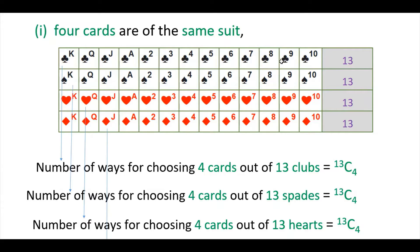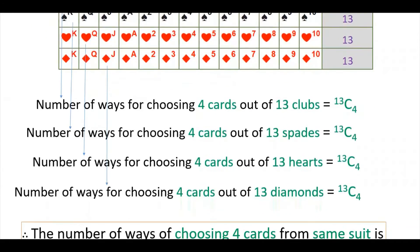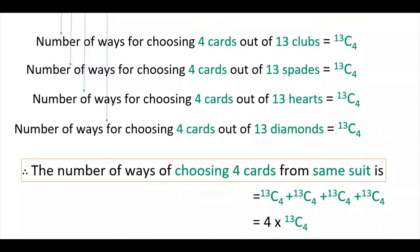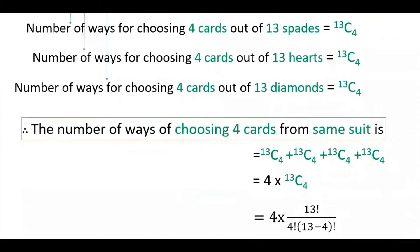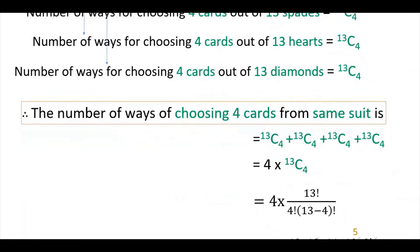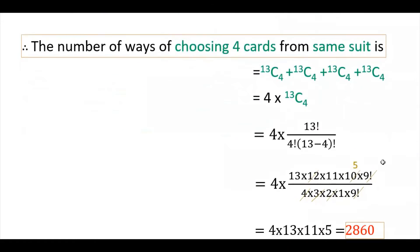From 13 club cards, the number of ways of choosing 4 is 13C4. Similarly, from 13 spades it is 13C4, from 13 hearts 13C4, and from diamonds also 13C4. Therefore the total number of ways of choosing 4 cards from the same suit is 4 into 13C4, which equals 4 into 13 factorial divided by 4 factorial into 9 factorial, giving 2860.